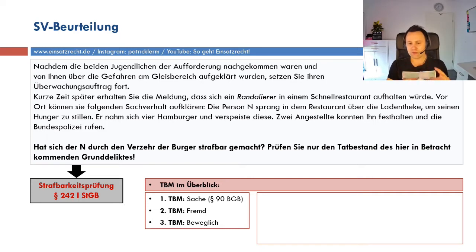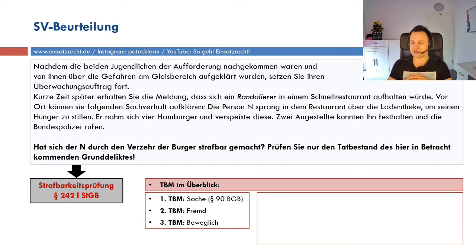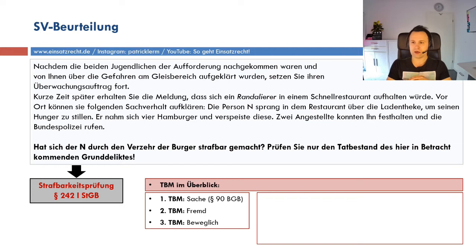Hier nur überblicksartig eine Lösungsskizze, damit ich sage, was ich jetzt abarbeiten muss. Bei Sache bitte nicht vergessen: §90 BGB – da steht drin, was Sachen sind, zumindest zivilrechtlich, und das übernimmt man hier im Strafrecht auch. Wie muss die Sache beschaffen sein? Fremd – und sie muss beweglich sein.